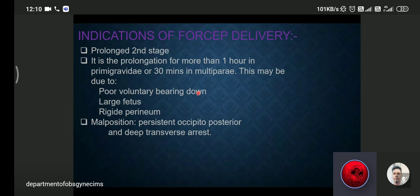Indication of forceps delivery: prolonged second stage. If it is prolonged more than one hour in primigravida and 30 minutes in multipara, this may be due to poor voluntary bearing down effort, large fetus, or rigid perineum. Sometimes there is malpresentation, specially persistent occipitoposteal position and deep transverse arrest. These are the indications.